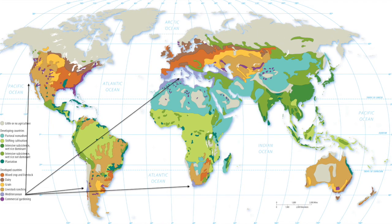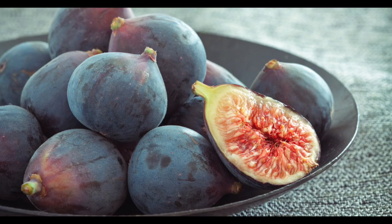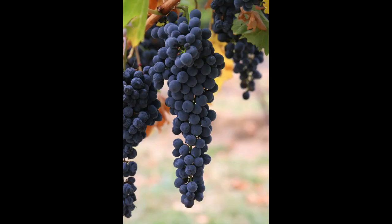The next agricultural region to take note of is Mediterranean agriculture. Mediterranean agriculture is found in the Mediterranean Sea area, but we also find it in Southwest Australia, Chile, California, and Southern Africa. Mediterranean climates are well known for dry summers and cooler wet winters. Crops from these areas are usually figs, dates, olives, and grapes — especially grapes for making wine, as all of these areas are also known for their wine production.